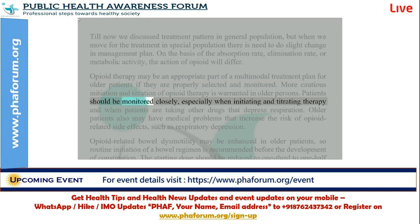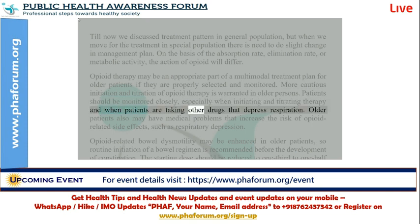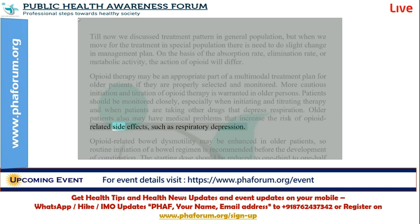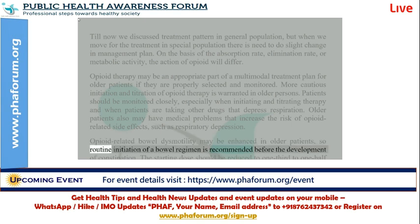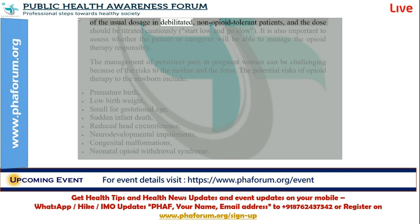Patients should be monitored closely, especially when initiating and titrating therapy and when patients are taking other drugs that depress respiration. Older patients may have medical problems that increase the risk of opioid-related side effects, such as respiratory depression. Opioid-related bowel dysmotility may be enhanced in older patients, so routine initiation of a bowel regimen is recommended before the development of constipation. The starting dose should be reduced to one third to one half of the usual dosage in debilitated, non-opioid tolerant patients, and the dose should be titrated cautiously — start low and go slow.